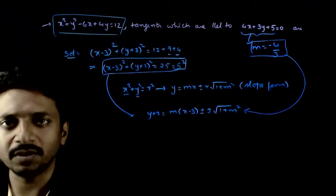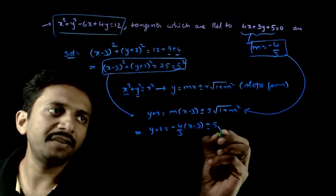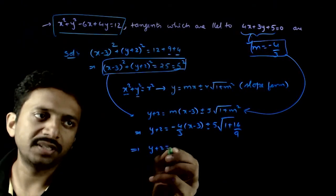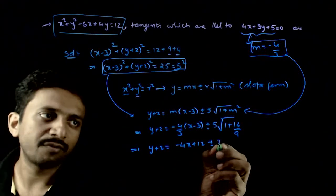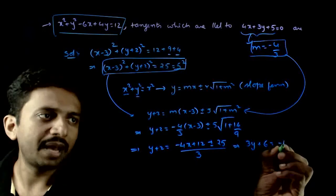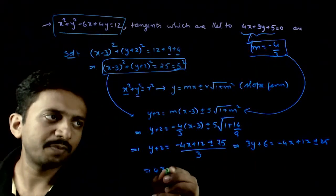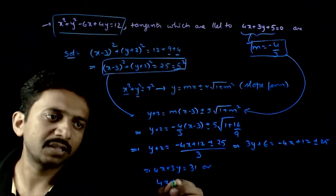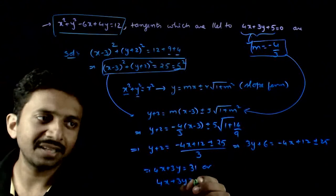I want the tangent with slope minus 4 by 3, so put m equal to minus 4 by 3. This gives y plus 2 equals minus 4 by 3 times (x minus 3) plus or minus 5 times root of 1 plus 16 by 9. This implies y plus 2 equals minus 4x plus 12 plus or minus root of 25, giving 4x plus 3y equals 31 or 4x plus 3y equals minus 19.